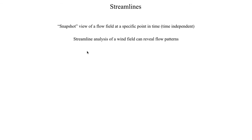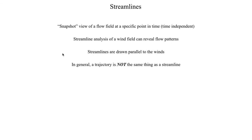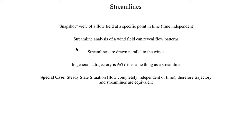Something called a streamline analysis is a very useful tool — it's a great way of visualizing the flow pattern, and you'll cover it in synoptic laboratory in your senior year. All you do is draw a curved or straight line that runs parallel to every wind barb on the map. In general, a trajectory is not the same thing as a streamline. However, in the special case of a steady-state situation — where the flow is completely independent of time — your trajectory and streamline are equivalent.